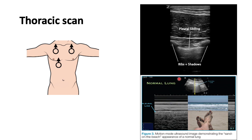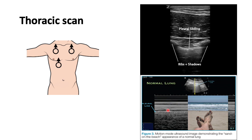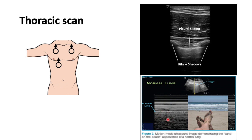In M-mode, you should be able to see what is called a seashore sign in a normal lung — you have a granular pattern followed by the seashore appearance as a barcode.